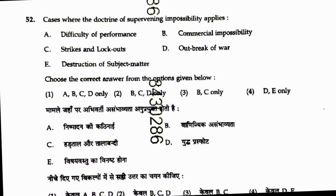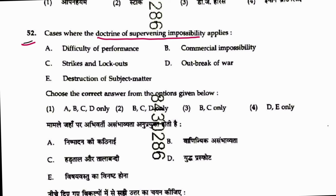Question 52: Cases where the doctrine of supervening impossibility applies. The doctrine of supervening impossibility is the doctrine of frustration — meaning that after the contract, some situation has arisen which makes the performance of the contract impossible. The reasons can be: no commercial impossibility, no strikes and lockouts, no outbreak of war, yes destruction of subject matter — so options D and E are correct. Answer is 4. The provision is in Section 56, Para 2 of the Contract Act.